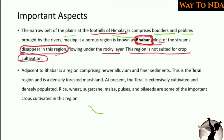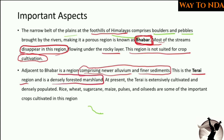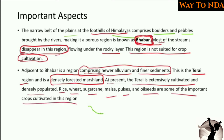Beyond the Bhabar, the next zone is the Tarai region, comprising newer alluvium and finer sediments. This Tarai region was earlier densely forested and marshy. At present the Tarai is extensively cultivated and densely populated, with important crops such as rice, wheat, sugarcane, maize, pulses, and oilseeds grown in this region.